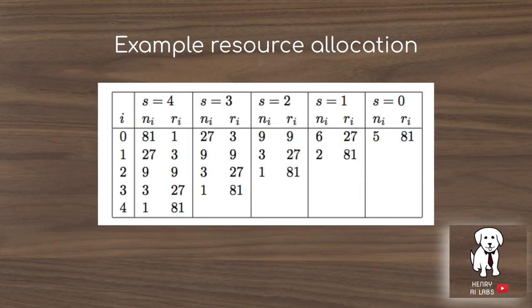In an example resource allocation table, N is the number of configurations and R is the resources allocated to each one in that bracket. In the first set, 81 configurations would have one resource each, then one configuration would have 81 resources, and 3 configurations would have 27 resources. This is the core idea of Hyperband.